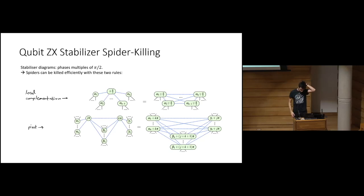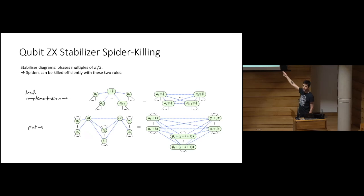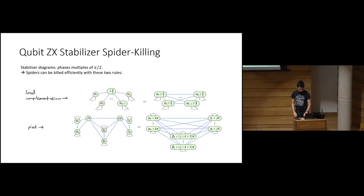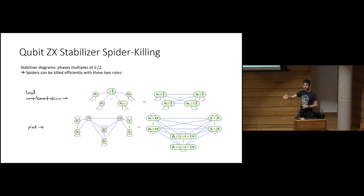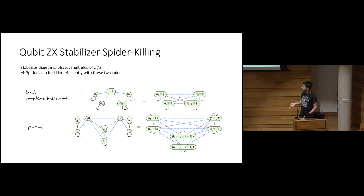These two operations yield efficient rewrite rules for stabilizer diagrams — diagrams where all phases are multiples of pi over 2. Local complementation gives a rule that removes spiders with pi-over-2 phases by deleting a spider and adding more edges. The pivot gives a rule that removes pairs of spiders with multiples of pi, again introducing edges on their neighbourhoods. Together these two spider-killing rules allow efficient rewriting of any stabilizer qubit diagram.